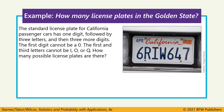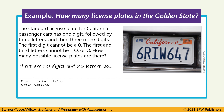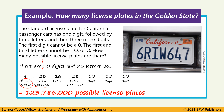We're going to use that same multiplication counting principle. There are 10 digits from 0 to 9 and 26 letters in the alphabet. The first item on the license plate can't be a zero, so there are nine digits remaining. The next is a letter which can't be an I, an O, or a Q, so there are 23 options for that one, and so on. Multiplying all these together, there are 123,786,000 possible license plates.